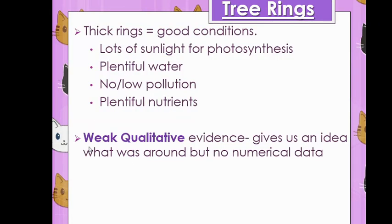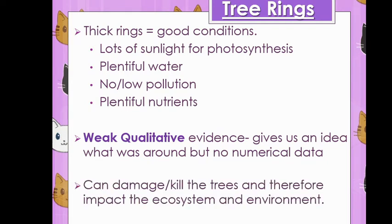So it'll give us a rough idea of the growing conditions, but I can't use it to say, for example, in this year 125 millimetres of rain fell. I can't do that. All I can say that there was probably a decent bit of rain. It's weak data because it doesn't give us specifics. It just gives us a rough idea. And also, the retrieval of this evidence can be damaging to the tree. As some of you have done some extra research, you may have found ways of harvesting this evidence without killing the trees, but it's still tricky to do right.